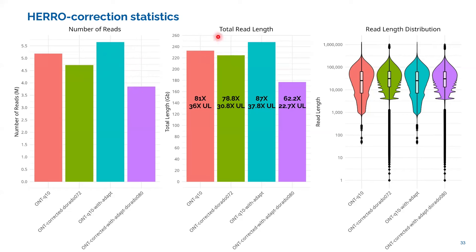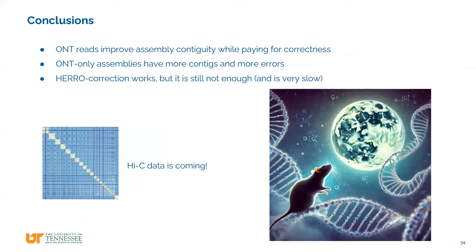The throughput — the total sum of read lengths — shows a drop in coverage. The read length distribution of corrected Nanopore reads seems to prefer certain lengths in the output. To conclude: Nanopore reads improve assembly contiguity, but you pay in correctness, since Nanopore-only assemblies have more contigs and more errors. The correction works well but at computational cost — you need large GPUs to correct reads within a reasonable timeframe.